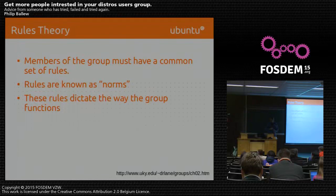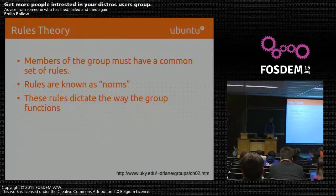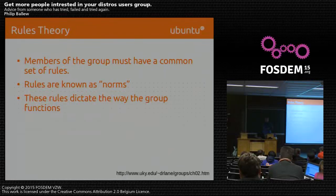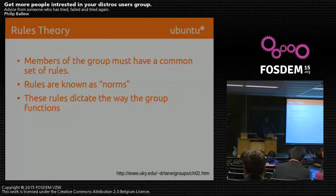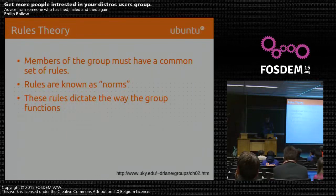Even if the asshole is super productive, consider how many potentially new members their attitude keeps away. You might get more output from five people who are okay than from one who's really great but an asshole who keeps the five away. It's totally okay to tell people: 'We appreciate your help but this is not working out — go find another project where you can work better.' Some open source communities have an asshole culture and are certainly very productive, but I personally am not a part of them.